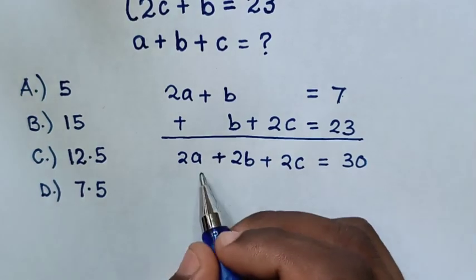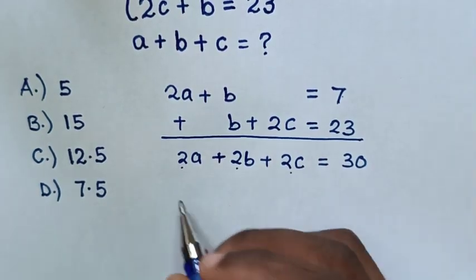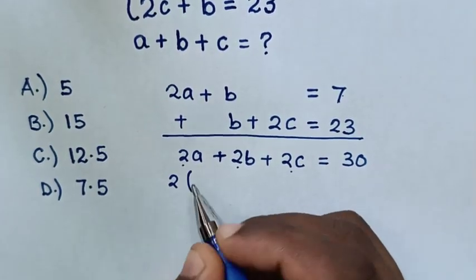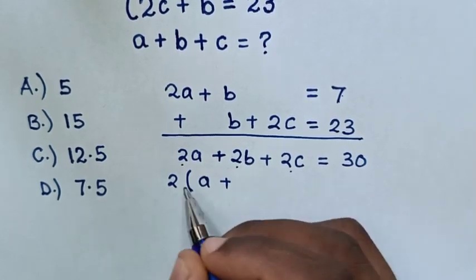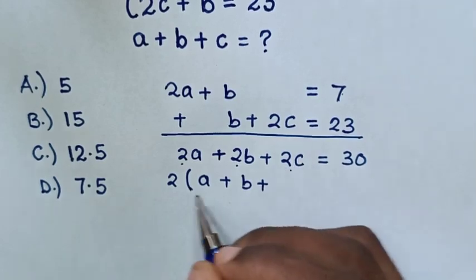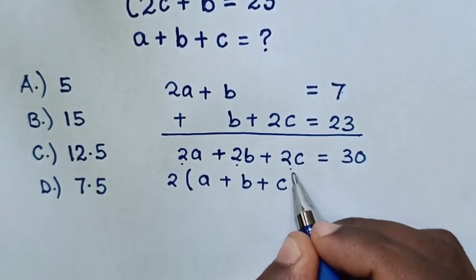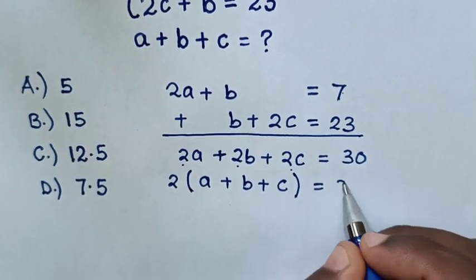In the left side, 2 is common, so we take 2 out of the bracket. This divided by this is A, plus this divided by this is B, plus this divided by this is C, equals 30.